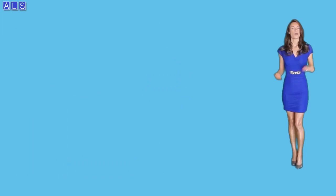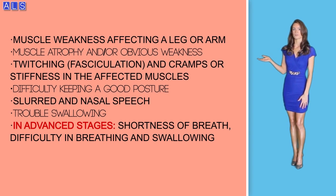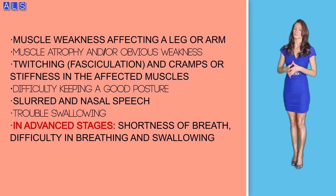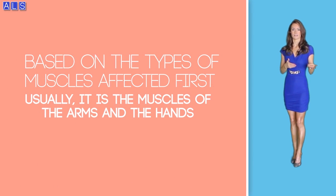Early signs and symptoms of ALS are muscle weakness affecting a leg, arm, or both; muscle atrophy; obvious weakness; twitching; cramps or stiffness in the affected areas; difficulty keeping good posture; and slurred and nasal speech. Early signs can differ based on the muscles affected first. Usually it is the muscles of the arms and hands that make ordinary activities like writing or buttoning a shirt difficult. For other patients, it is the leg muscles affected first — they may feel awkward while walking and running, and may start to stumble or trip often.